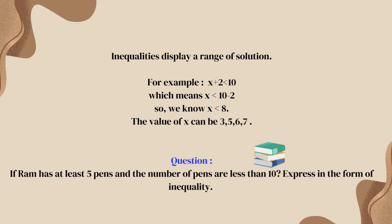When it comes to inequalities, rather than a particular solution, inequalities display a range of solutions. We have considered an example: x plus 2 is less than 10. When we rearrange, x is less than 8. So many numbers satisfy this inequality — 2, 3, even 7 all satisfy it. Rather than talking about a particular solution, they show us a range of solutions. There might be so many numbers that satisfy this inequality.